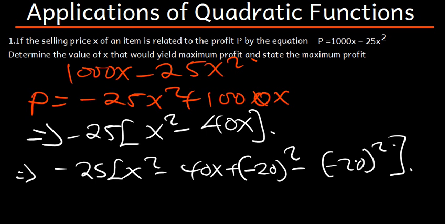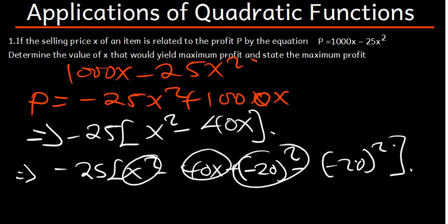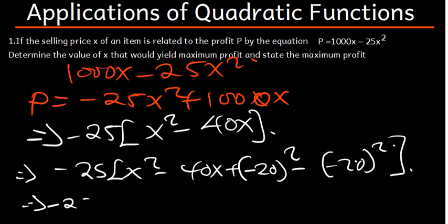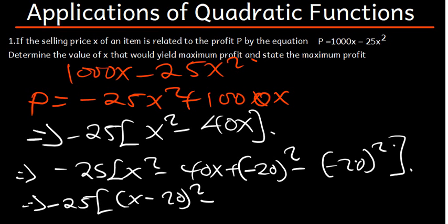Next step: we take this and this, and ignore the middle 40X part — that's what we do in completing the square. So it becomes negative 25 times open bracket X minus 20 squared. Then negative 20 times negative 20 gives us 400, so we have minus 400 inside the bracket.